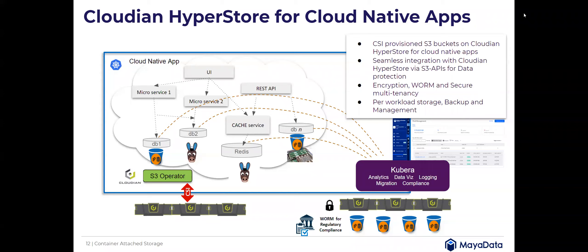Cloudian is an enterprise-grade object storage solution built on S3 APIs, already proven for various use cases in the existing ecosystem - be it backup, analytics, Splunk, and so on. But for cloud native applications, it brings unique value because you now have the ability to match a distributed cloud native application to a distributed storage platform. It gives you the granularity required for different services to access the right storage through APIs and leverage Cloudian through the S3 operator. We are working closely with the community to release the S3 operator and integrate Cloudian into the Kubernetes framework. A classic use case is backup target, and today we're going to talk a lot about data protection.